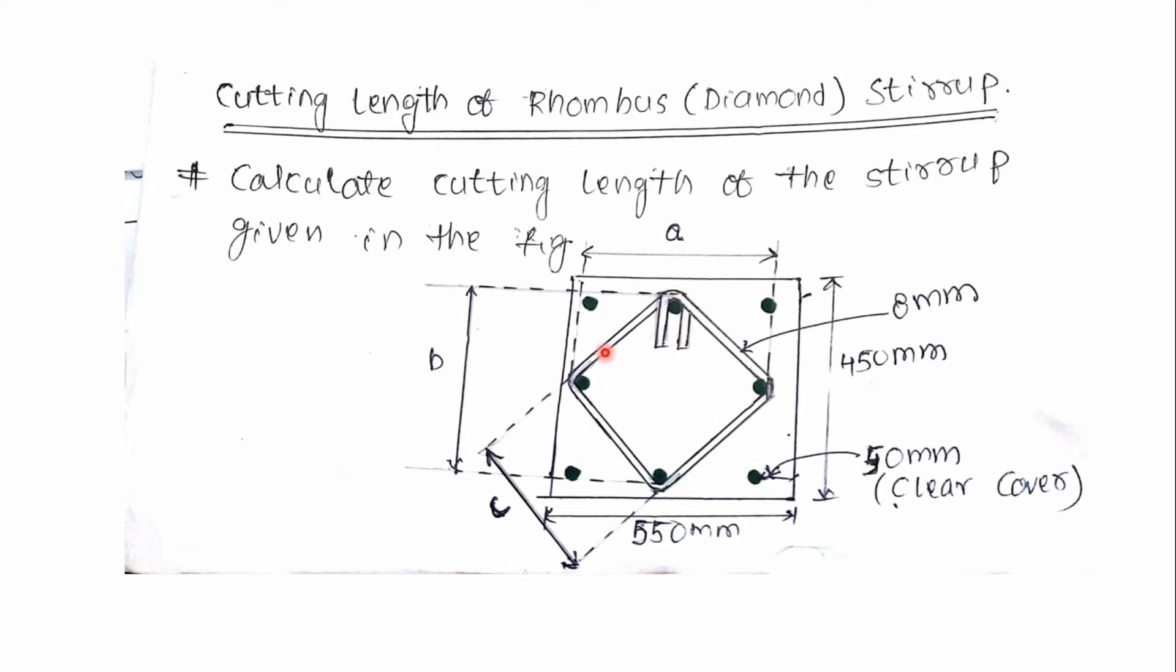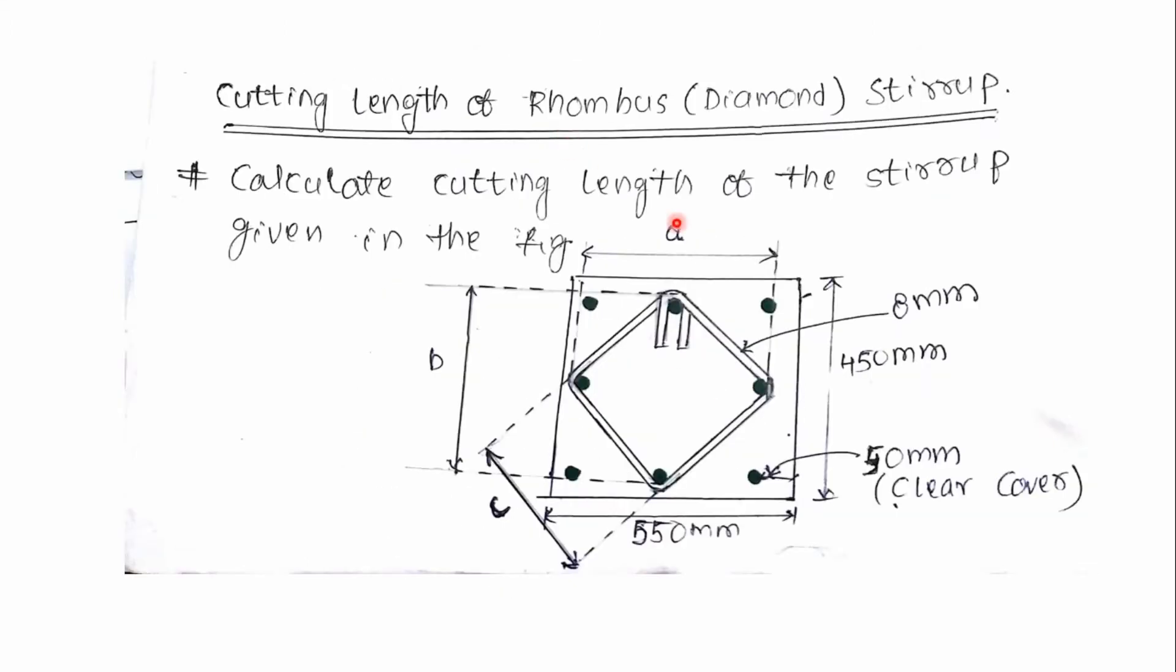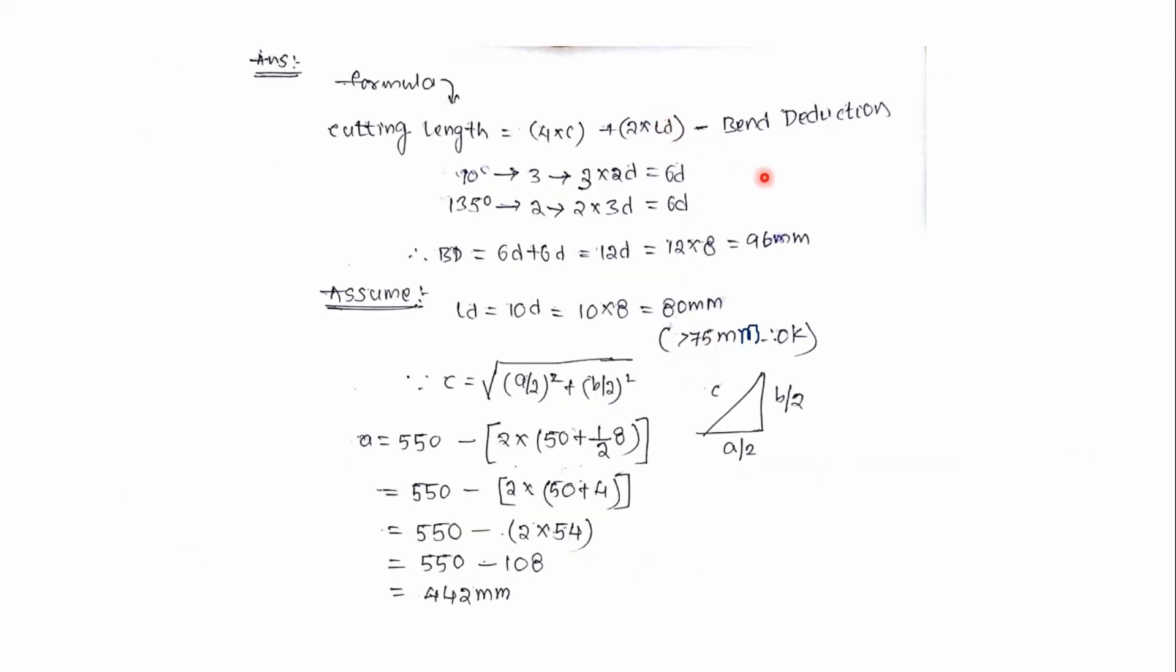So we have to add this inclined length 4 times, so that's what I did here: 4c. And this extended length 2 times, so 2ld. But I am subtracting bend deduction because when we bend a bar by some angle, the length of the bar will increase by some amount.